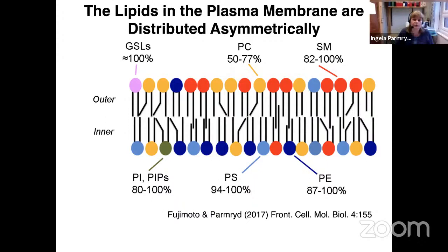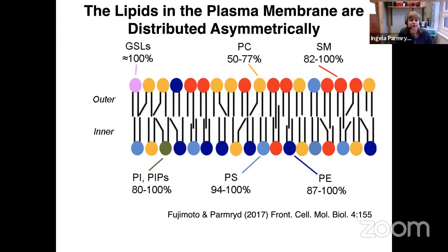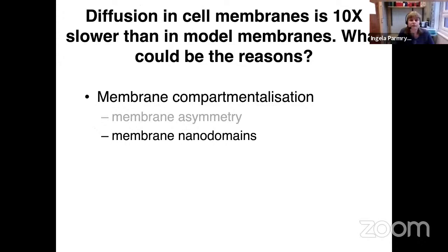Not maintaining this asymmetry does affect molecular behavior, but of course this is not the only possible explanation. We also have membrane nanodomains, widely known as lipid rafts, where there is heterogeneity in lipid packing in the plasma membrane — the biology version of ordered membrane domains. Lipid rafts have tighter packing and more extended chains, with interdigitation between lipids. To form an ordered membrane phase or lipid raft, you need sterols — in mammalian cells, that would be cholesterol.